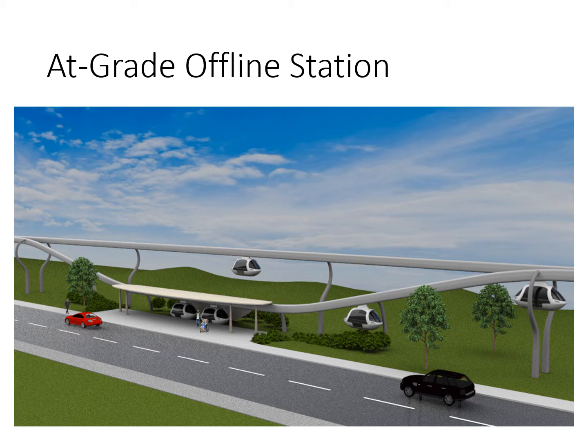PRT stations are offline on sidings, and vehicles not destined to a station can simply bypass it without slowing down. Most trips have few, if any, intermediate stops. We can have many small stations without slowing the system down and therefore keep walking distances short.